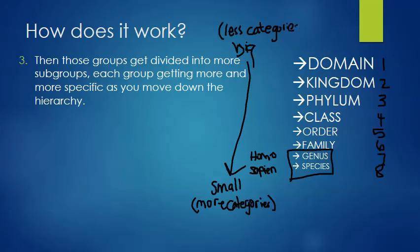Kingdoms, a little bit smaller, but we still only have six. Species, there's millions and millions of species. So the smaller you get, the more categories that you have.